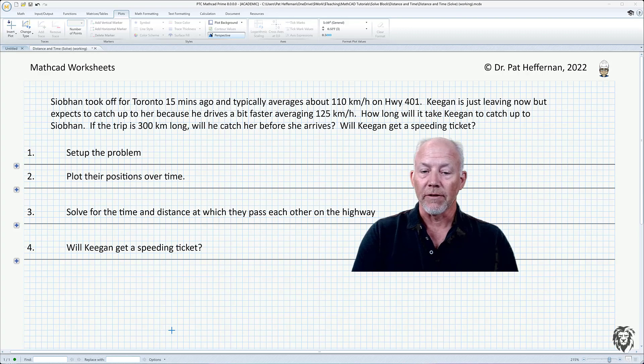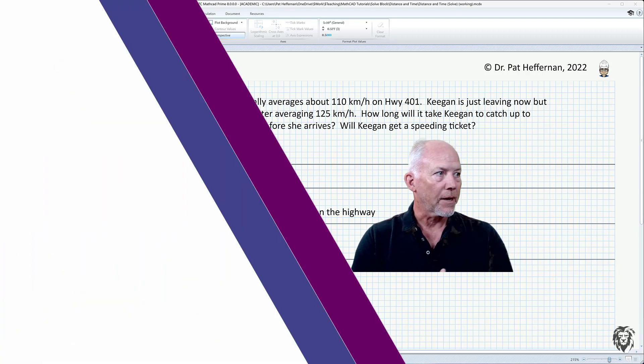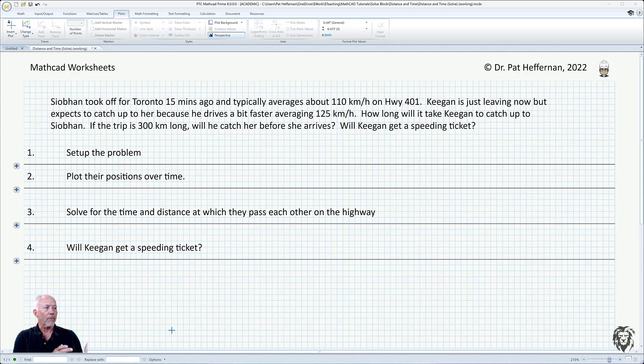It's a time and distance problem, so the physics shouldn't lose anybody. Siobhan took off for Toronto 15 minutes ago and she's traveling down the 401 at 110 kilometers per hour. Her brother Keegan is just leaving now, but expects that he's going to catch up to her because he drives a bit faster and usually averages about 125 kilometers per hour. So the question is, how long will it take Keegan to catch up to Siobhan? And if the trip itself is 300 kilometers, will he catch her before she arrives in Toronto?